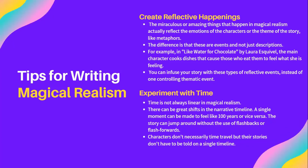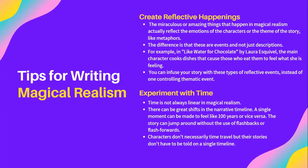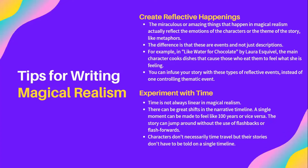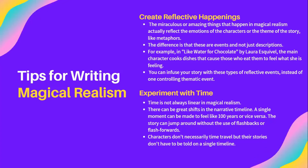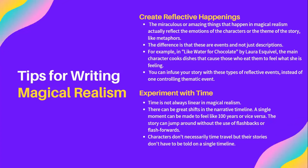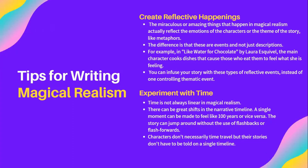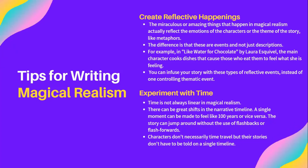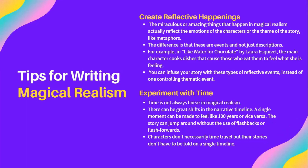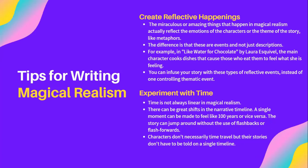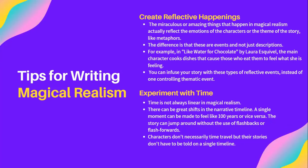And finally, you can experiment with time. Time is not always linear in magical realism — there can be great shifts in the narrative timeline. A single moment can be made to feel like a hundred years or vice versa. The story can jump around without the use of flashbacks or flash forwards. Characters don't necessarily time travel, although that can be an element of magical realism, but their stories don't have to be told on a single timeline.